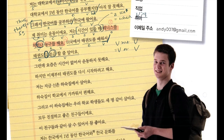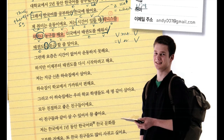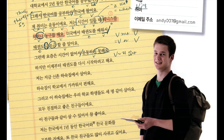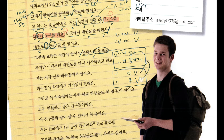그런데 요즘은 시간이 없어서 운동하지 못해요. Divided into two. Hidden subject is 'I.' 운동하지 못해요 — we already know this grammar point: verb 지 못 다, which is equivalent to 못 verb. They are both negation. 못해요 means incapability — I can't exercise because I don't have any time these days. 그런데 is another conjunction meaning 'however,' 'but,' 'nevertheless.'